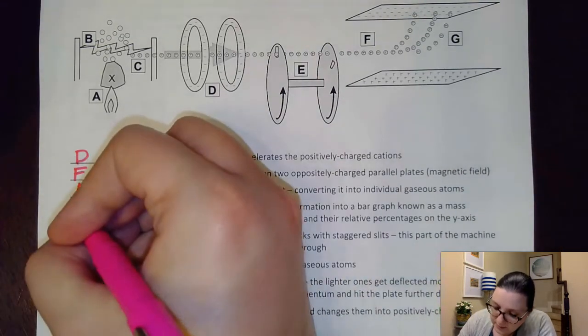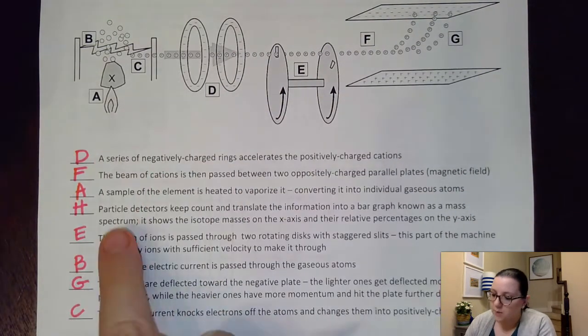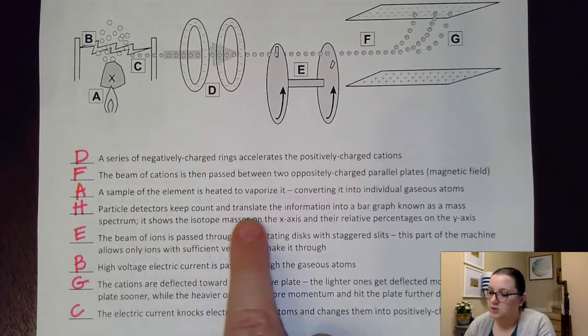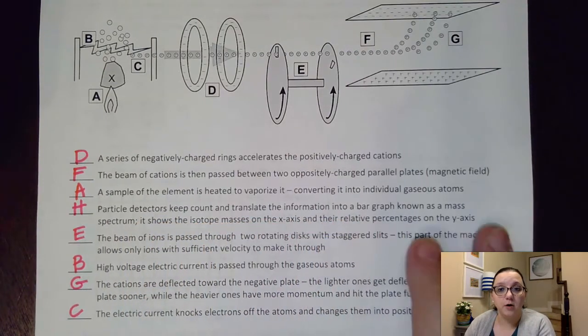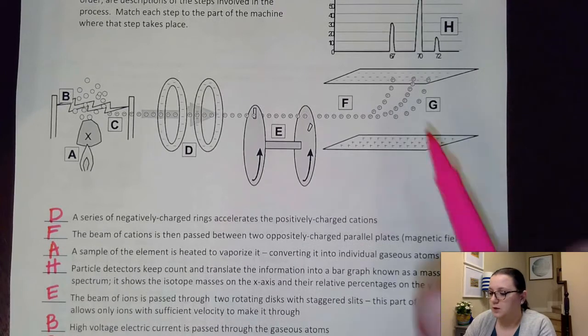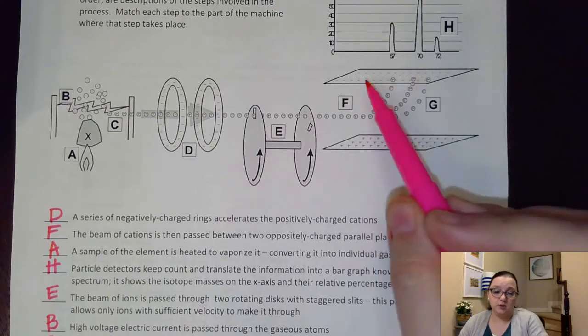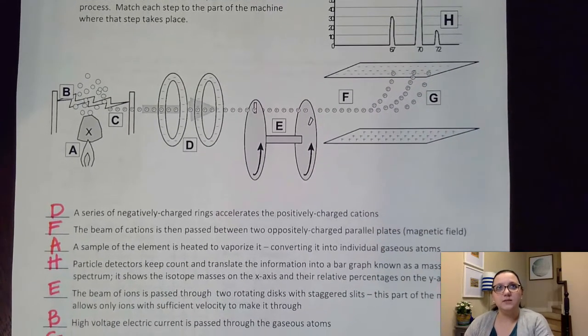So our last step here, step H. Particle detectors keep count and translate the information into a bar graph. So let me kind of explain what happens here. On this plate, we have sensors. And what the sensors do is they say, hey, I have X number of particles hitting this spot.